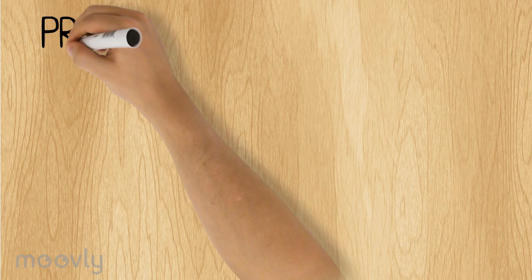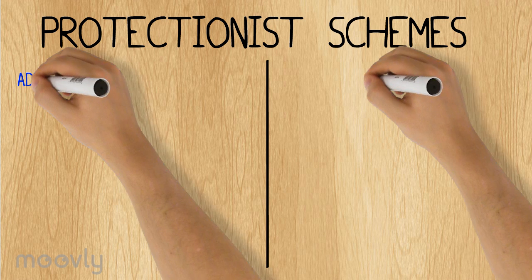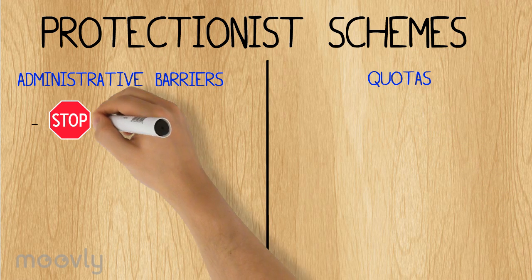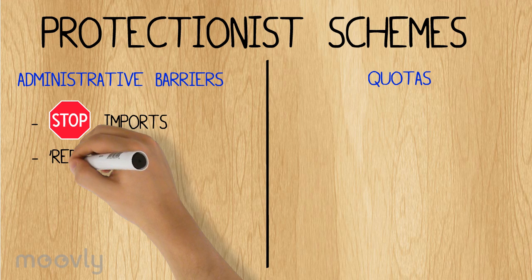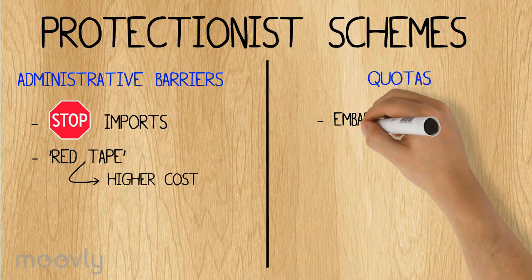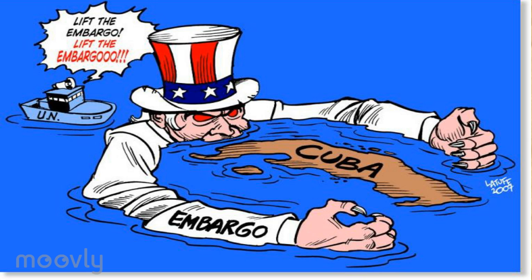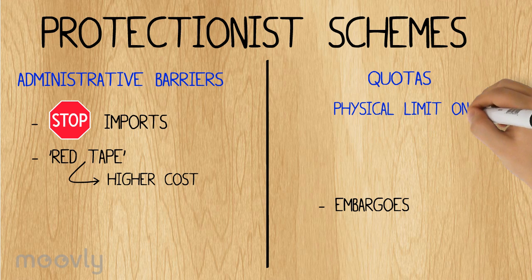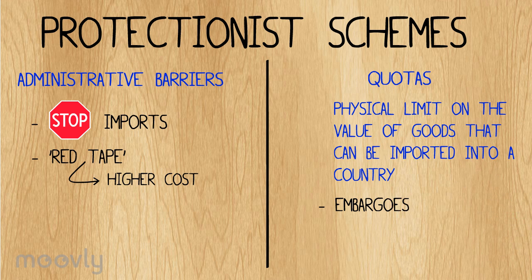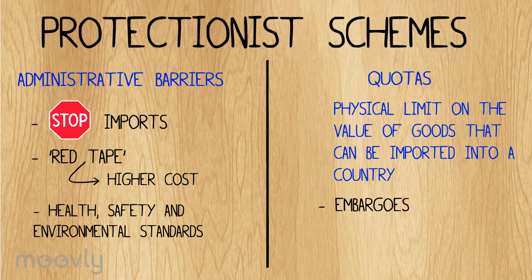The following protectionist schemes did not occur between Brazil and China, however they are worth mentioning. Administrative barriers are sometimes imposed to stop the imports of goods. The red tape is a process in which one complicates the paperwork to get the good into the country, slowing down the procedure and therefore leading to a higher cost. Embargoes are a very drastic quota, usually set due to political disputes, like the US embargo on Cuba. A quota is a physical limit on the value of goods that can be imported into a country.